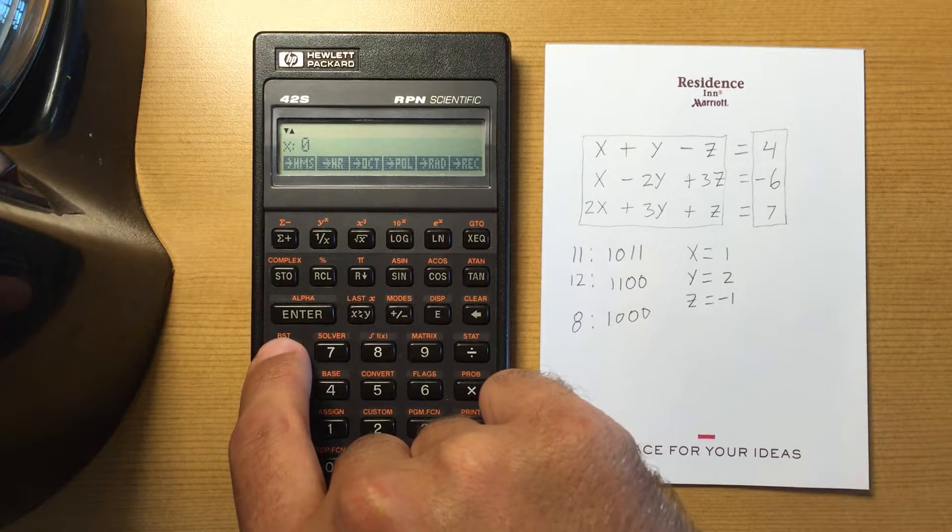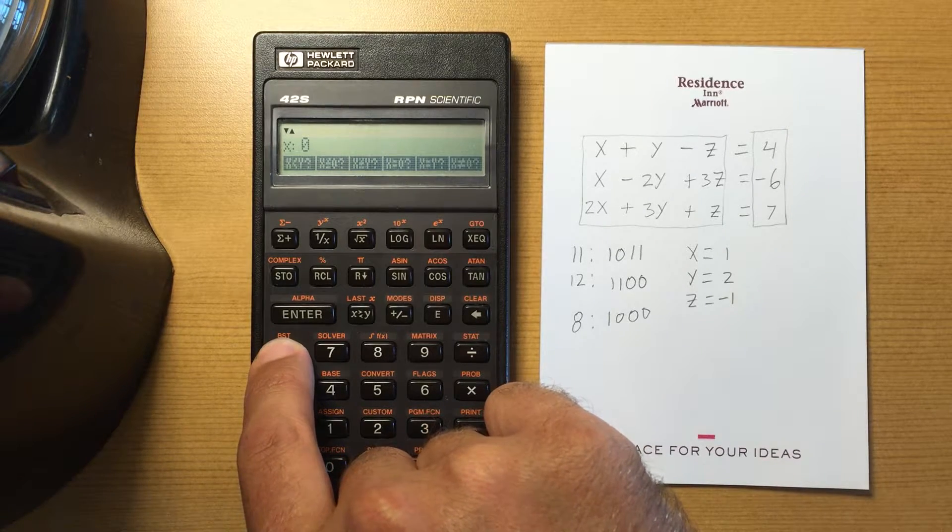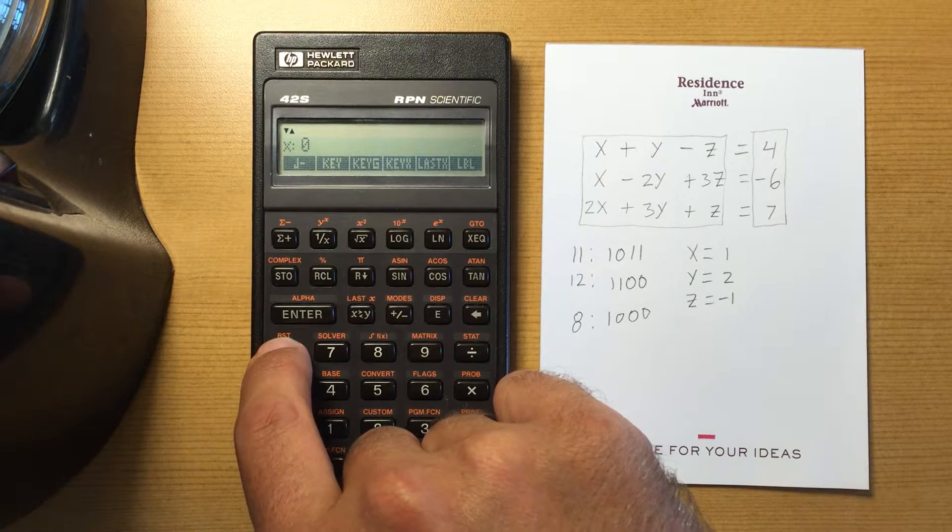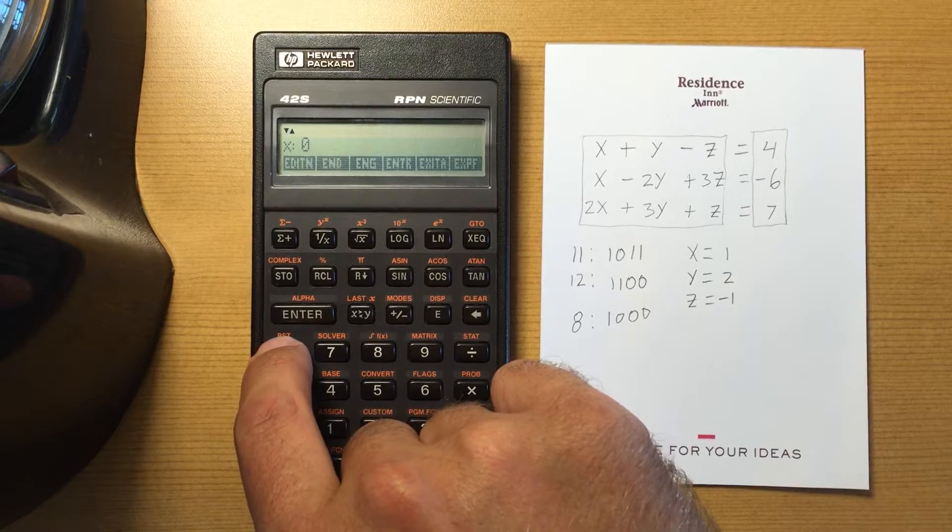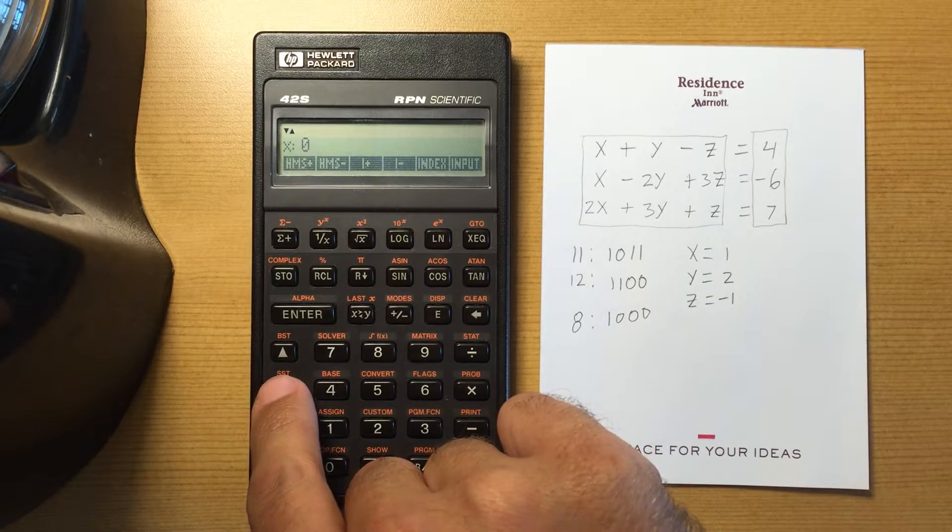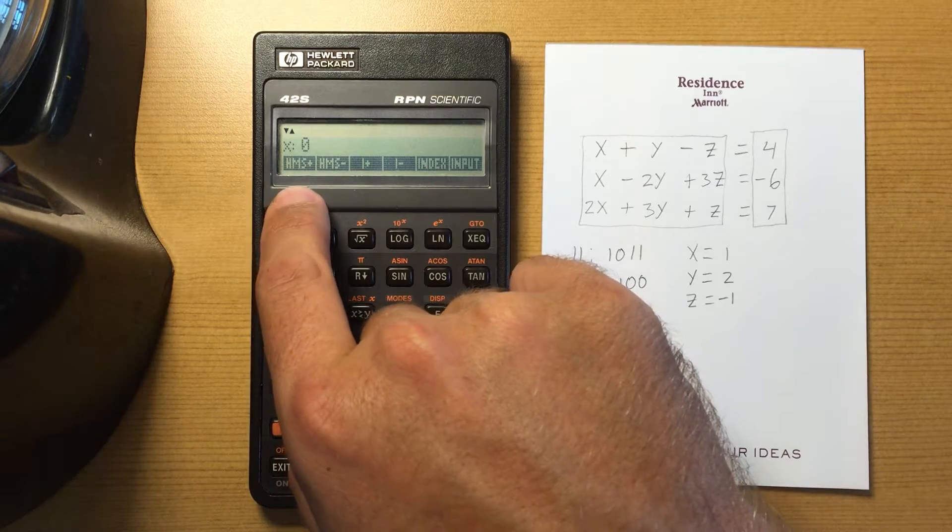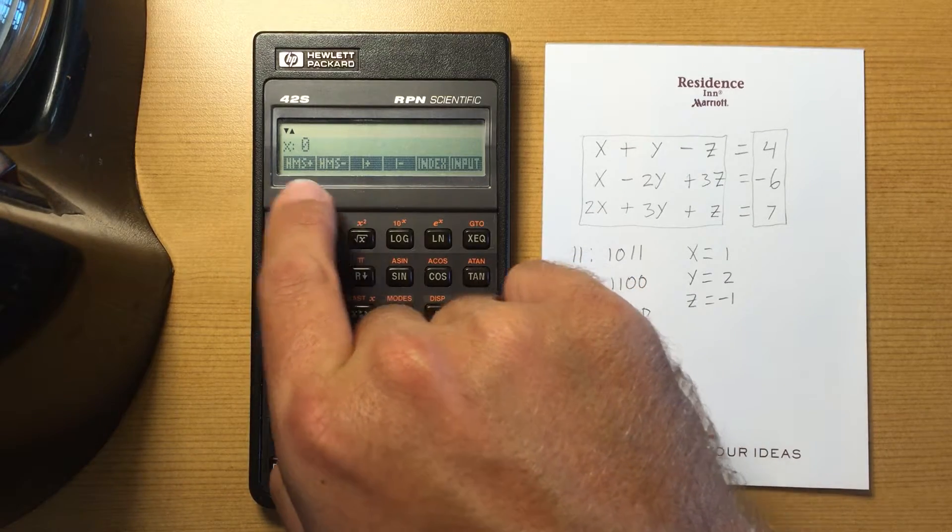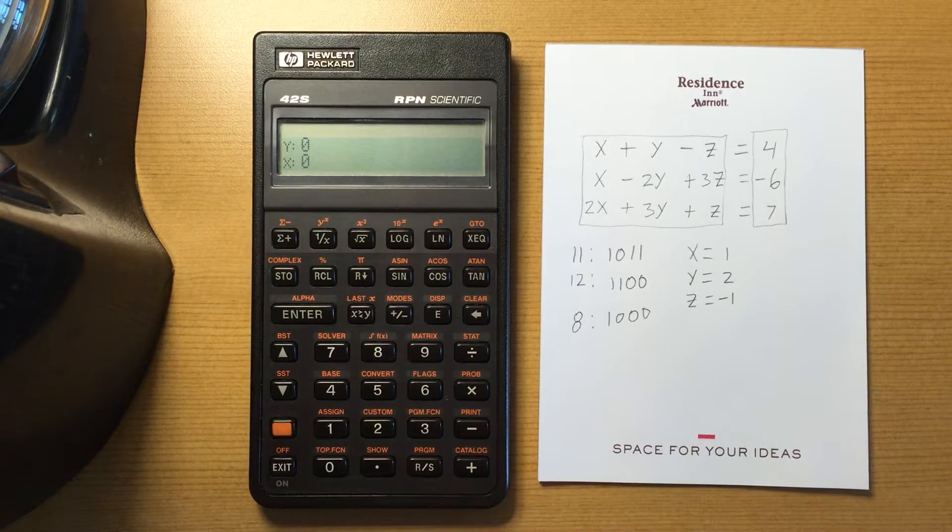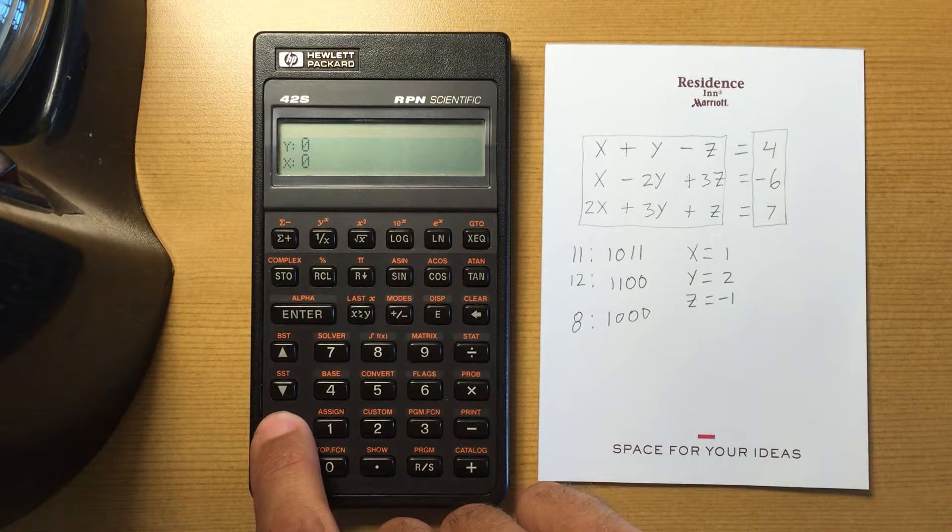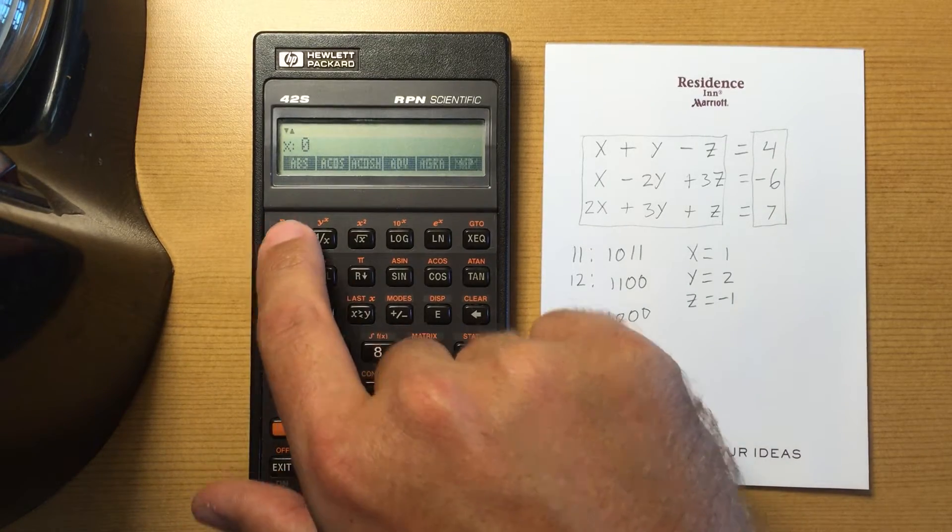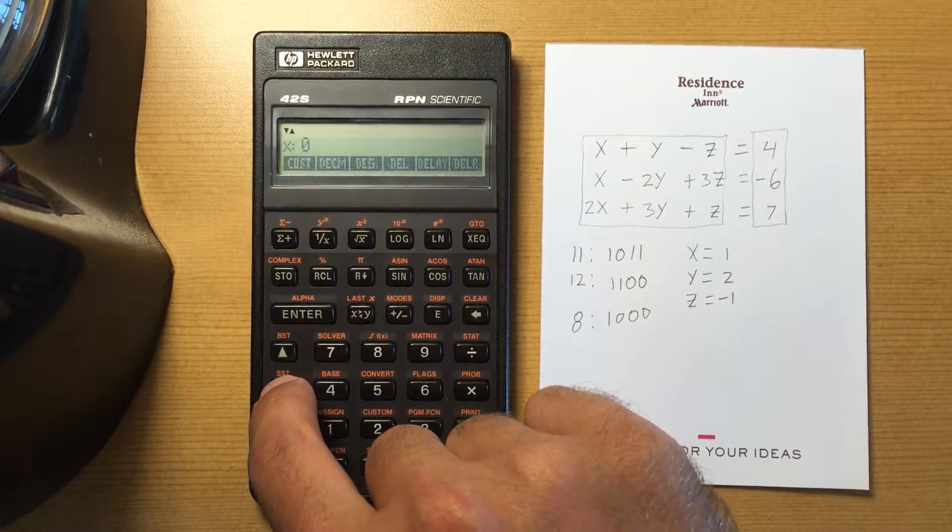If you're doing a lot of calculations, say for example you are doing conversions and you need to add hours, minutes, seconds together, go to HMS here and you can do plus or minus on your hours, minutes, seconds. You do it once, that takes you out of the menu. Even if you hold the menu on, I guess that would be a way you could do it.